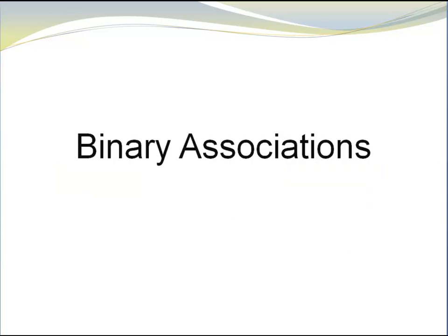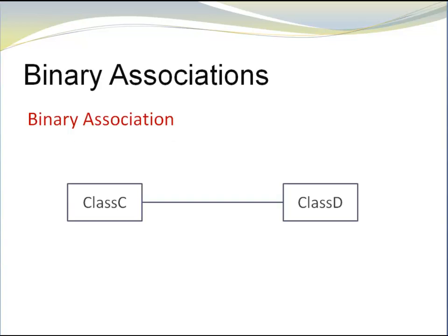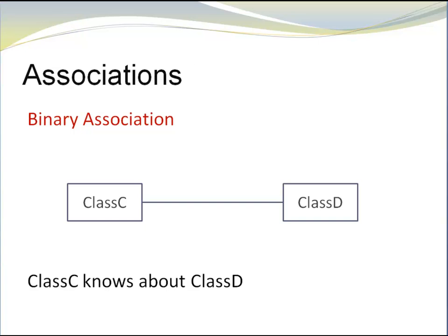Now I want to briefly talk about binary associations. Here I have class C and class D. Class C knows about class D and class D knows about class C. Notice there are no arrows. Arrows on both sides gives us as much information as no arrow at all. So we just make a simple line to indicate that this is a binary association.